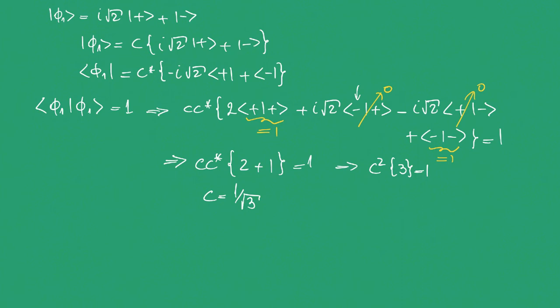Our normalized quantum state is |φ₁⟩ = (1/√3)(i√2|+⟩ + |−⟩), which is orthogonal to the original quantum state |ψ₁⟩.